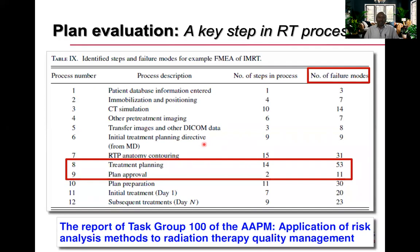Plan evaluation is a key step in the RT treatment delivery process. Looking at the AAPM Task Group Report 100, it gives us the number of failure modes at each step in RT treatment delivery. Nearly one-third of the total failure modes occur at the stage of treatment planning and plan approval. Plan evaluation gives us one last chance to identify and stop those failure modes from propagating further.